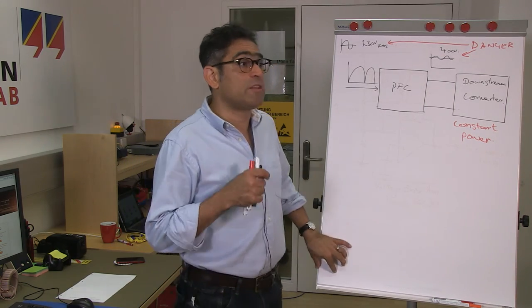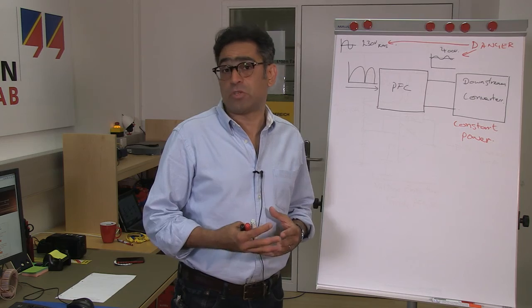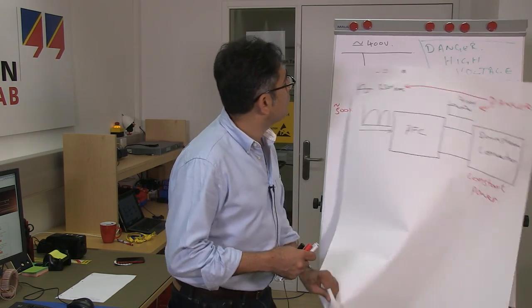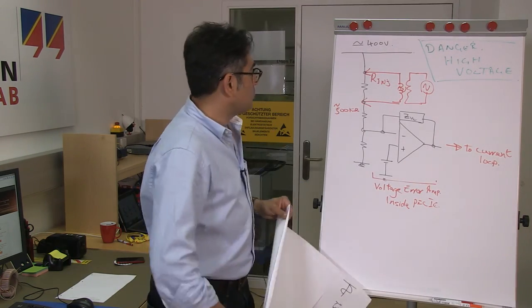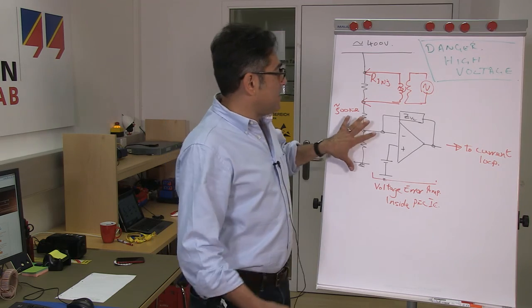Now please note that the voltage loop is very, very slow. Typically the crossover of the voltage loop is about five to ten Hertz. And in order to measure it we have a measurement setup that looks like this.